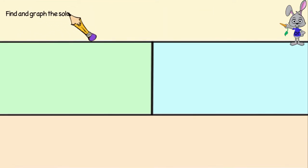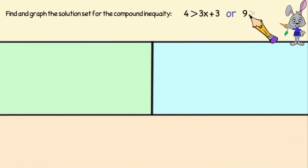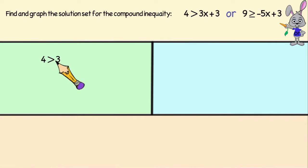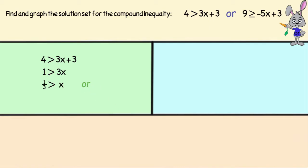Let's look at one more example: 4 is greater than 3x plus 3, or 9 is greater than or equal to negative 5x plus 3. First let's solve 4 is greater than 3x plus 3. We would add negative 3 to each side of the inequality, giving us 1 is greater than 3x. Then we divide each side by 3, leaving us with 1 third is greater than x, or we could write that as x is less than 1 third.